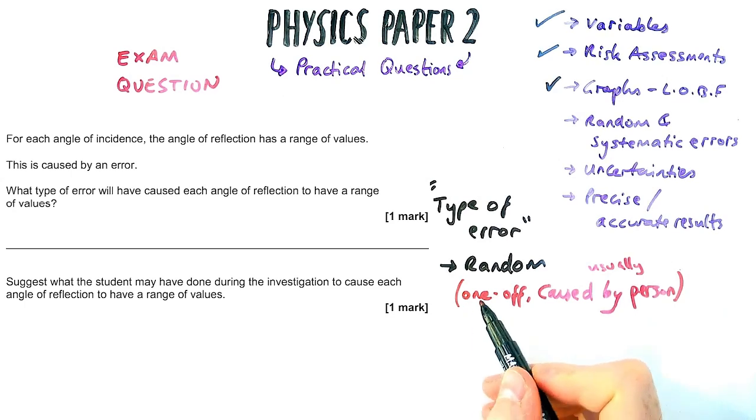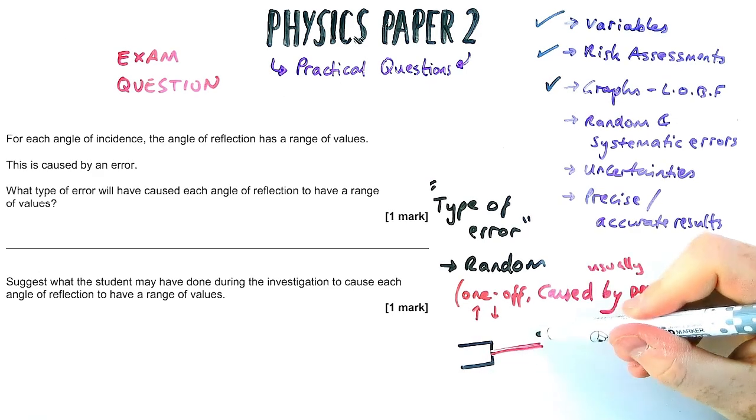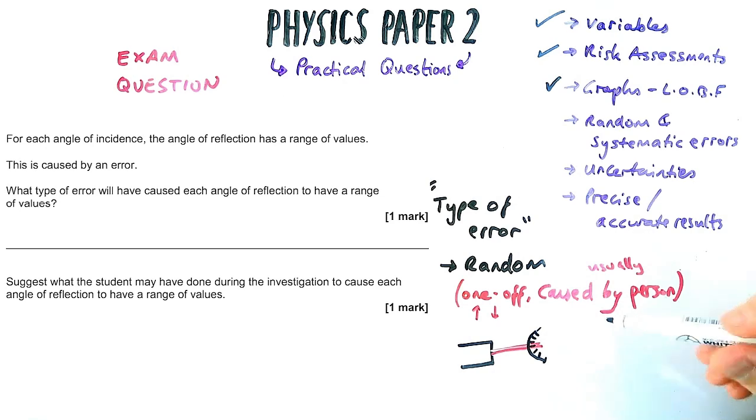So a random error is a one-off error, usually caused by a person, and it's one-off, but it could make that answer higher or lower, basically. So the opposite side is systematic, which affects every reading in the same way. So the fact it's got a range of values means that it's affecting all readings slightly differently, so it must be a random error.